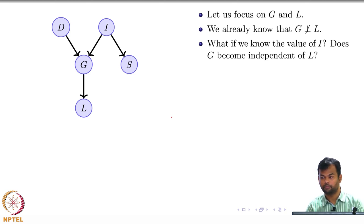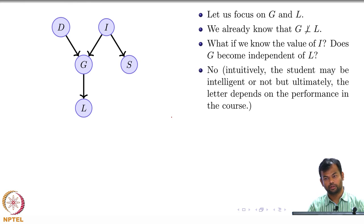No. But we just said that the rule was a node is independent of its—oh sorry, sorry, sorry, that was a different rule. So this is what would happen, right? The student may be intelligent or not, but ultimately the letter depends on the performance in the course, right? So whether the student is going to get a good letter or not, that depends on the performance in the course. So even if you know the value of I, L and G do not become independent of each other.